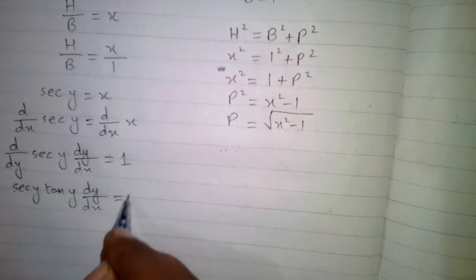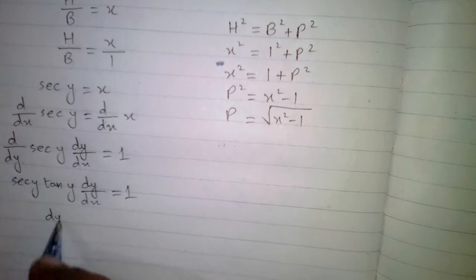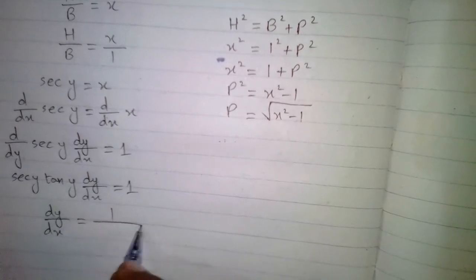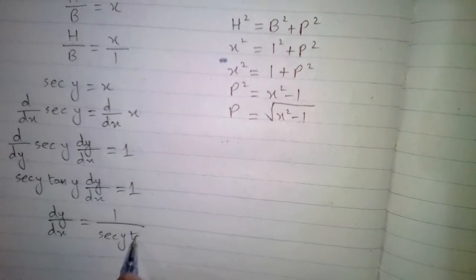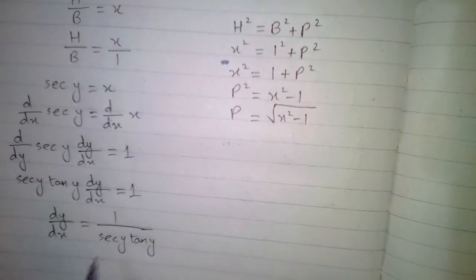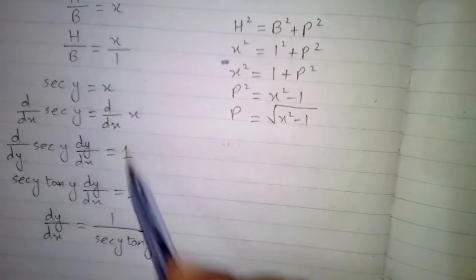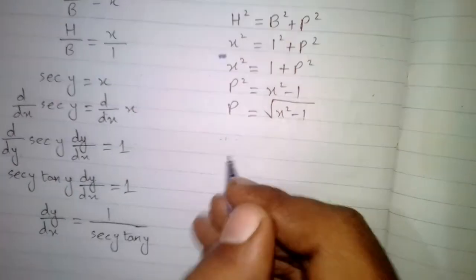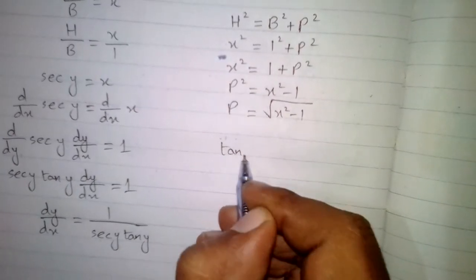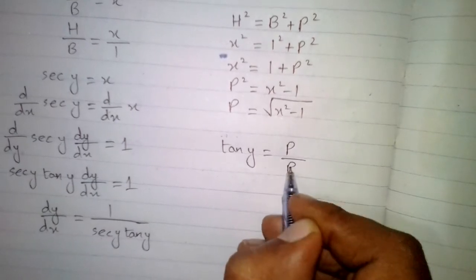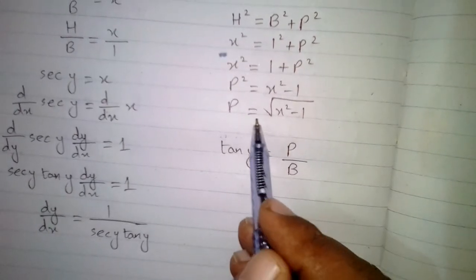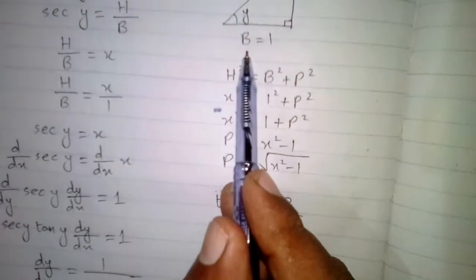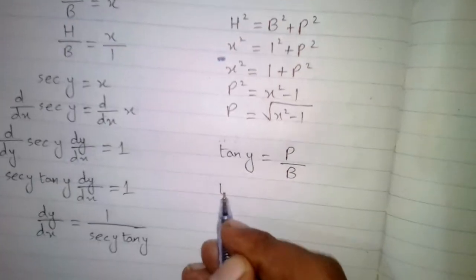So we can say that dy by dx equals 1 upon sec y tan y. The value of sec y is x. Now we have to find the value of tan y. We know that tan y equals perpendicular upon base, and the value of perpendicular is square root of x square minus 1 and the value of base is 1.